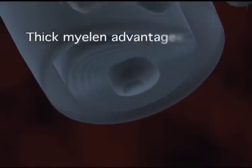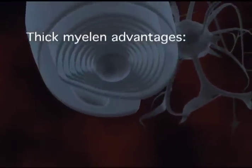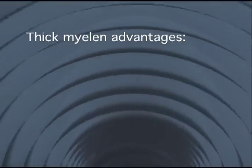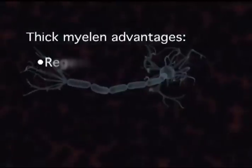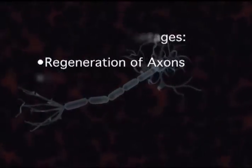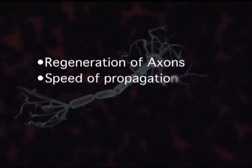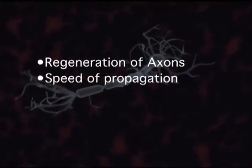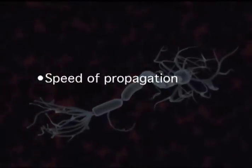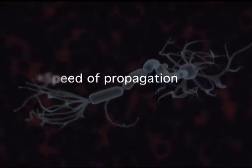The thicker the myelin, in other words the more layers of cell membrane making up the myelin, the more advantageous it is to the axon. One advantage is the regeneration of severed axons. Another advantage is an increase in the speed of the propagation of the action potential along the axon. The rest of this presentation will concentrate on the increased speed of action potentials down the length of the myelinated axon.